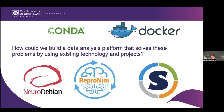So that's the problem state we started with. The question we asked was: how can we build a data analysis platform that solves these problems by using existing technology and projects, without reinventing the wheel? We started at BrainHack 2020 with a very small team. There's NeuroDebian for packages, ReproNim's NeuroDocker project which builds Docker containers from recipes, Docker itself for packaging applications, Singularity and Apptainer for HPC systems, and Conda for Python packages. So let's see what we can do with these.